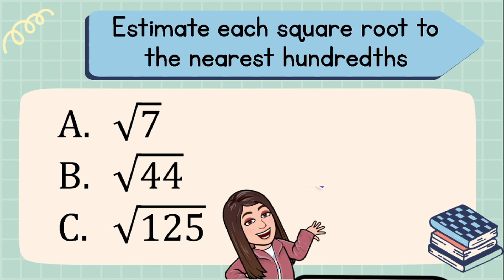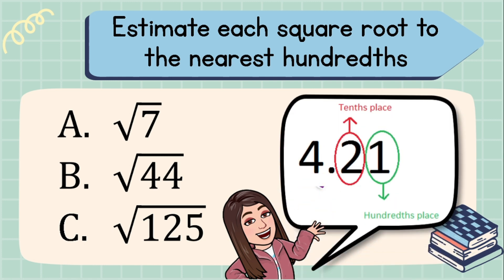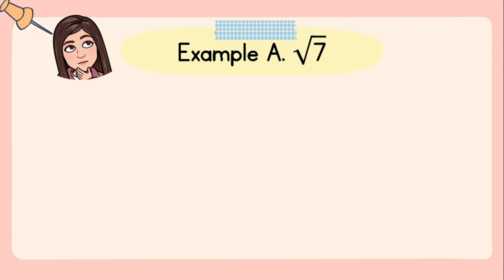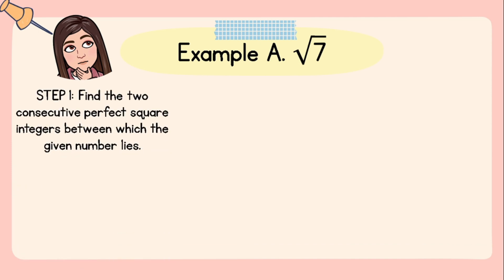Note that the place value of the first digit after the decimal point is what we call tenths, and the next place value after tenths is hundredths. Now we will start with Example A. Step number one: find the two consecutive perfect square integers between which the given number lies. Since 7 is not a perfect square, its principal root is irrational. We need to find the two perfect squares between which 7 lies — these are 4 and 9. Therefore, square root of 7 lies between square root of 4 (which is 2) and square root of 9 (which is 3).